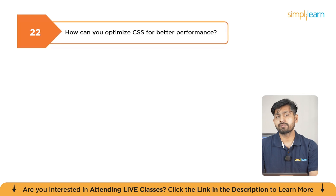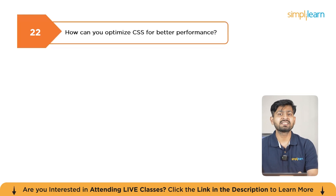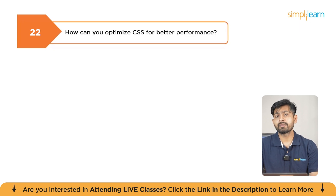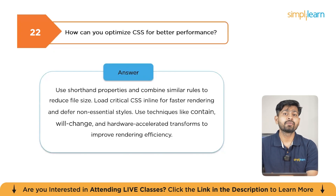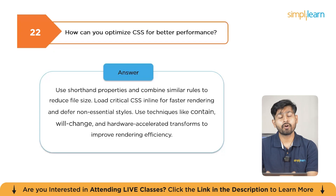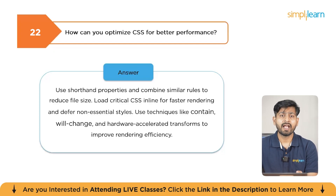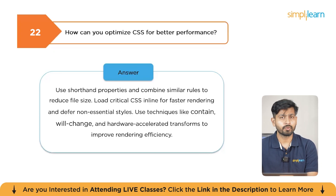How can you optimize CSS for better performance? To optimize CSS, you can minify and combine CSS files to reduce file size, avoid using too many complex selectors, and remove unused styles. Following these practices will increase performance.